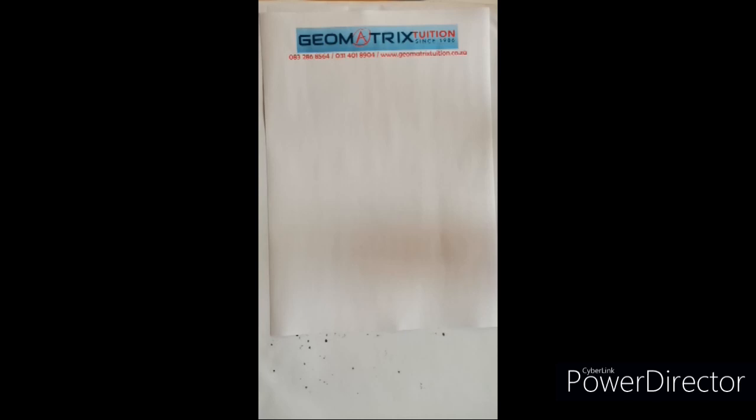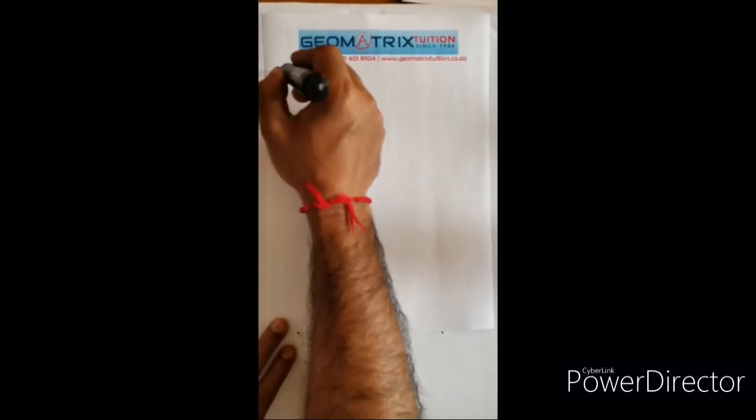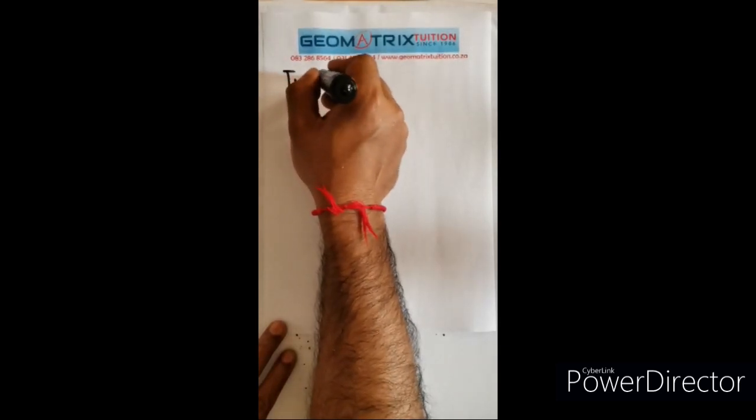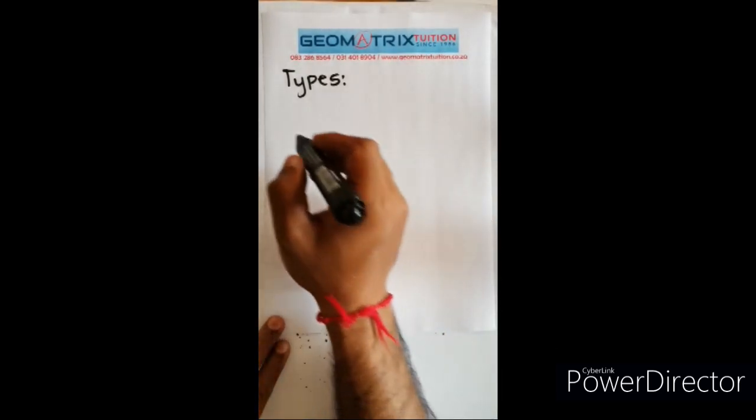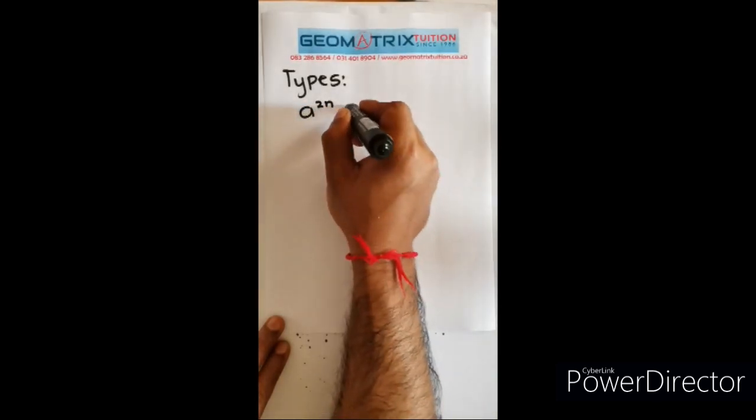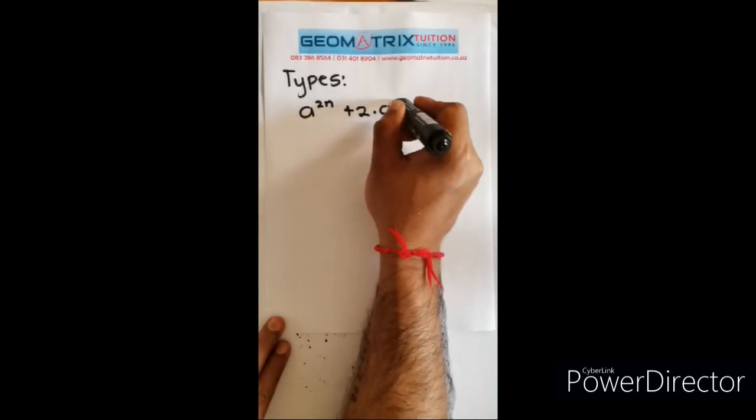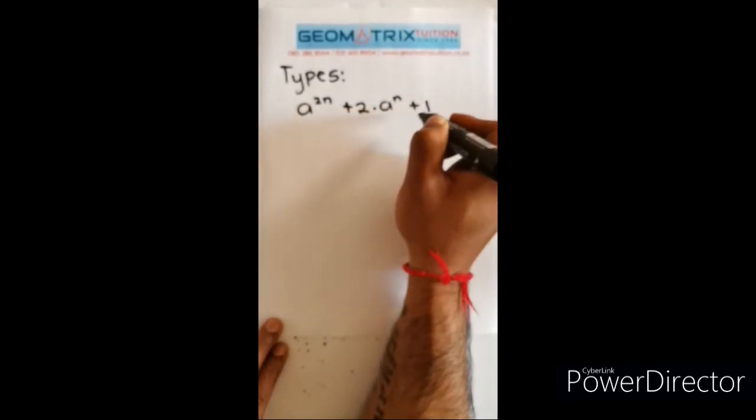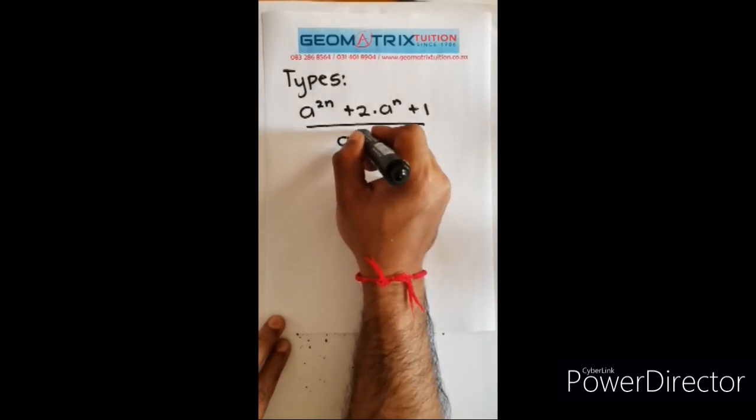So let me show you the worst case scenario and how we get away with it using the k method. This is type 5, the worst case scenario. In this question here I have a to the 2n plus 2 times a to the n plus 1 all over a to the n plus 1.